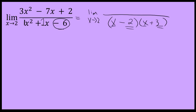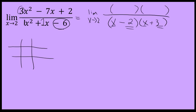The numerator is a little more difficult to factor because the coefficient on x squared is 3, not 1. There are a number of methods you can use. One method is known as the tic-tac-toe method. I have a link in the description to another video describing it in more detail, but I'll briefly use it to factor 3x squared minus 7x plus 2.